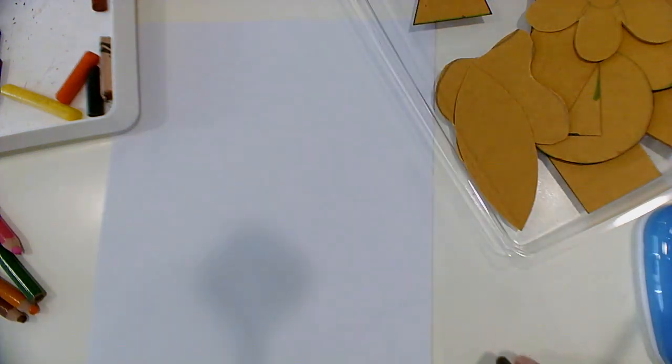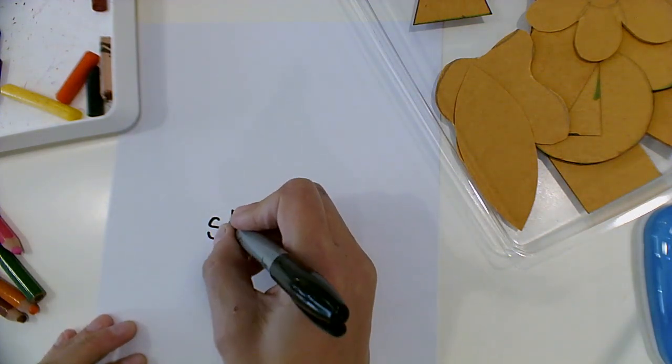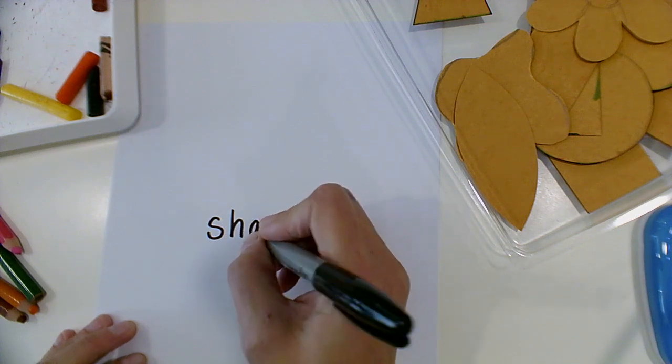Today we're going to talk about shapes. If you do not have tracers or things to trace as shapes, then you can just use the bottoms of different things or lids of things.